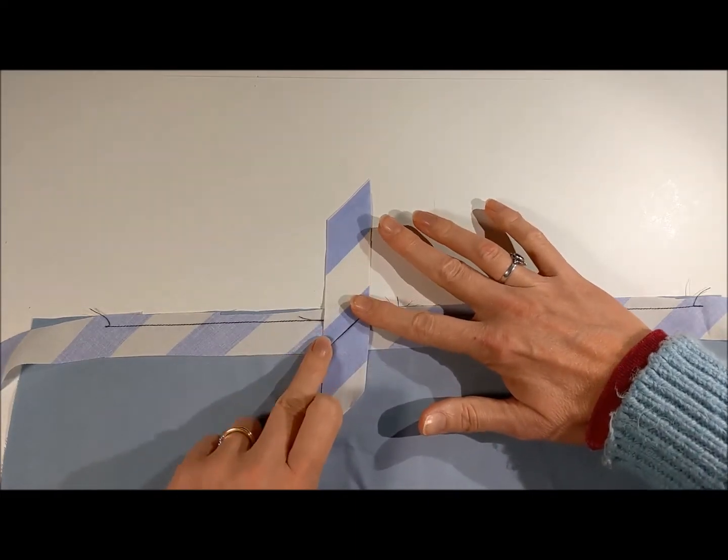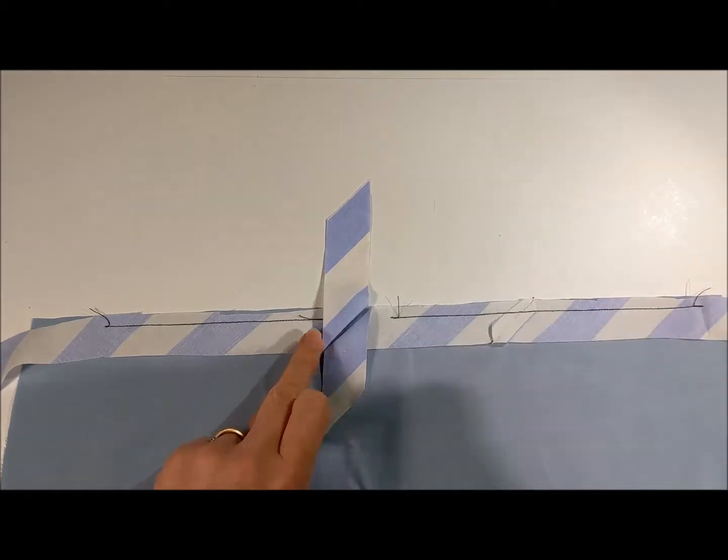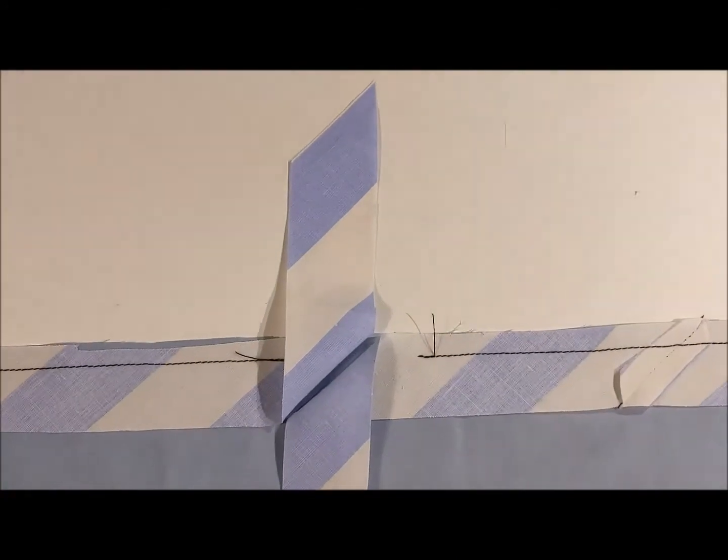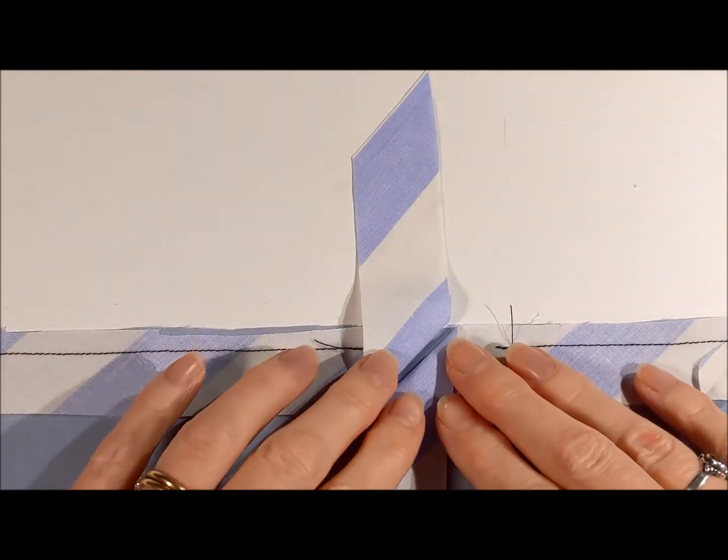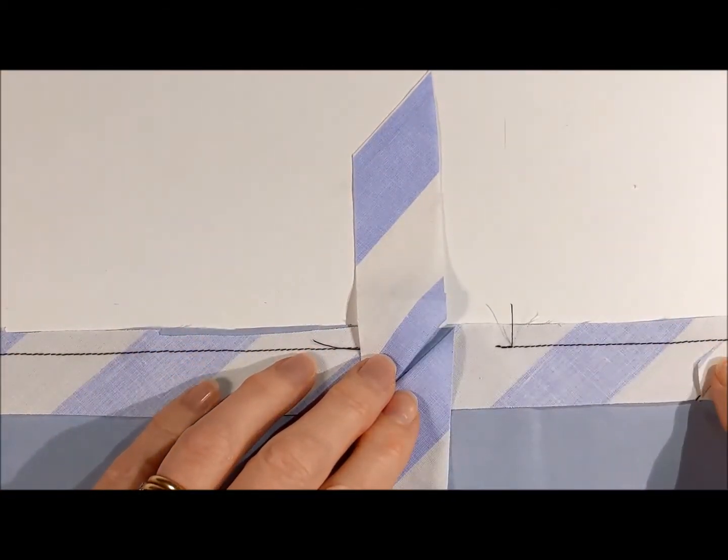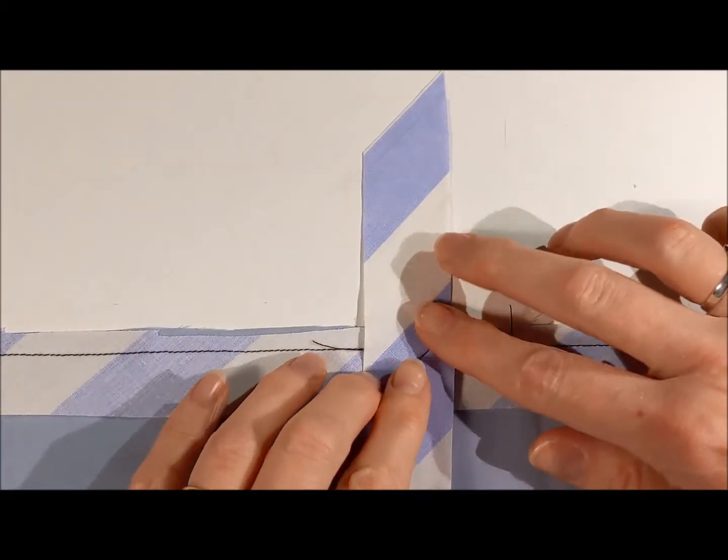I'm just going to iron those two bits flat together. I'm just going to zoom in again so you can just see. If you remember when we joined this bit we joined them at right angles.